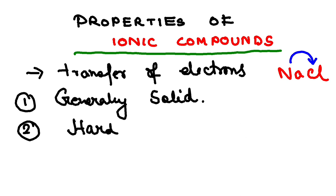Now, why they are hard? Because if I consider the case of NaCl, actually it is formed by combination of Na plus and Cl minus. So there is a cation and there is an anion. Between the cation and the anion, there is a very strong bond and this bond results in hardness.